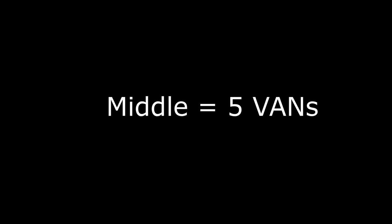I want you to remember VAN. V is for vein, A is for artery, and N is for nerve. You need to remember that the superior mediastinum has 11 VANs in total, the middle has 5, and the posterior has 4.